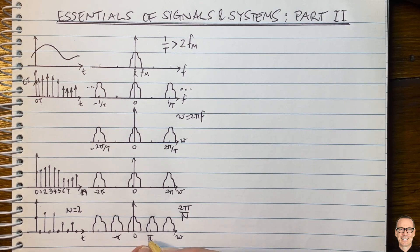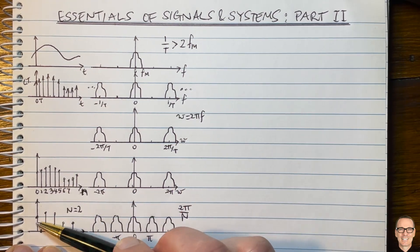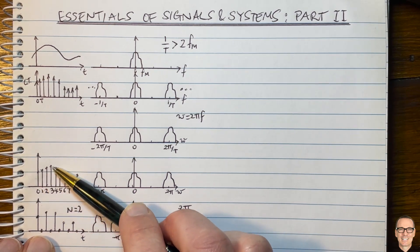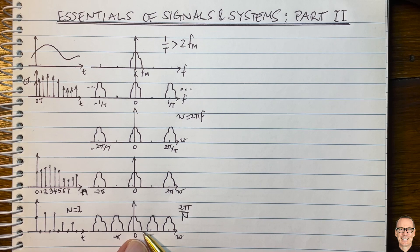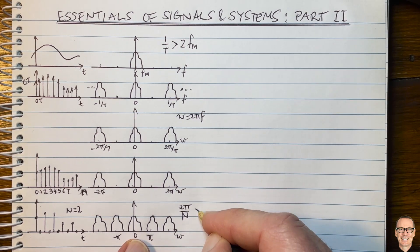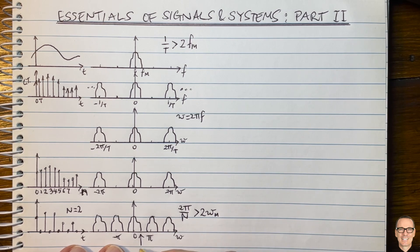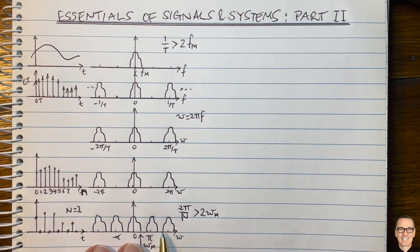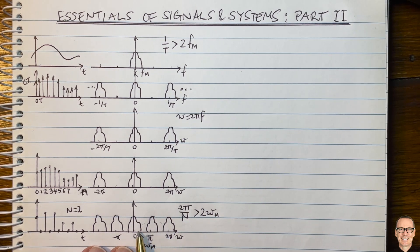The same Nyquist property applies as in continuous time. If we want to reverse the sampling and fully recover the original signal — for example, for compression — we need to ensure there is no overlap. So 2 pi on N needs to be greater than twice the maximum discrete time frequency, omega maximum. For example, with N equals 3, copies appear at 2 pi on 3, then 4 pi on 3, then 2 pi — two copies in between — and they may or may not overlap depending on the bandwidth of the original signal.